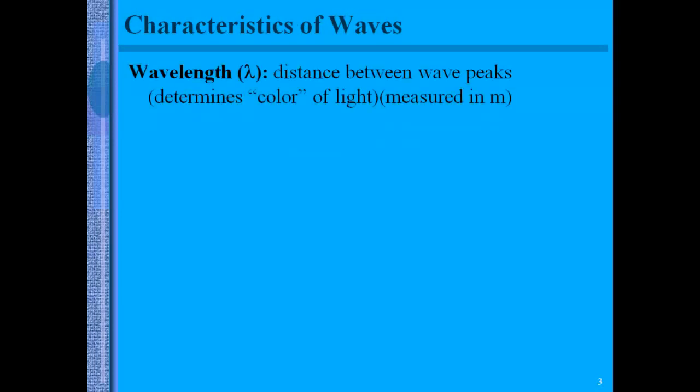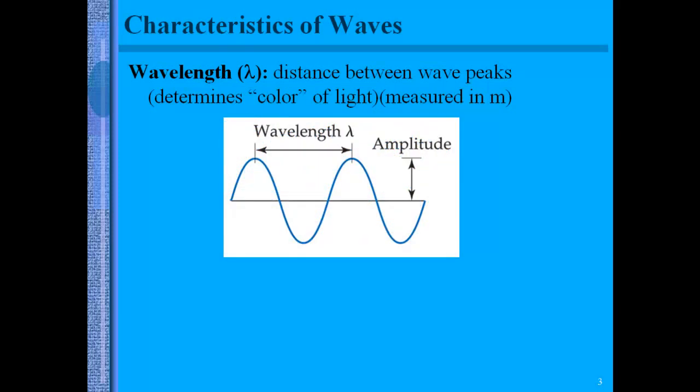Some common characteristics of waves. We have a wavelength and we'll use the lambda Greek symbol for wavelength, and this is the distance between the wave peaks. It will determine the color of light and it's measured in meters. Our frequency, which is indicated with the Greek letter nu, is the number of wavelengths per second and that will be measured in hertz or per second.